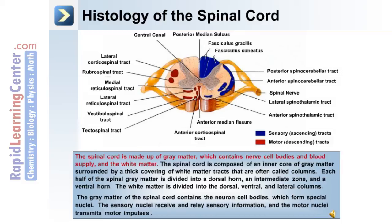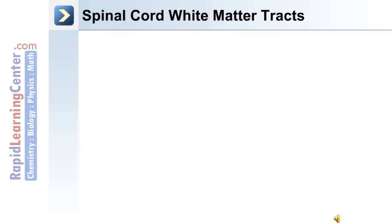The spinal cord is made up of gray matter, which contains nerve cell bodies and blood supply, and white matter. It is composed of an inner core of gray matter surrounded by a thick covering of white matter tracts, often called columns. Each half of the spinal gray matter is divided into a dorsal horn, an intermediate zone, and a ventral horn. The white matter is divided into dorsal, ventral, and lateral columns. The gray matter contains neuron cell bodies forming sensory nuclei, which receive and relay sensory information, and motor nuclei, which transmit motor impulses. Located within the white matter are the special white matter tracts.